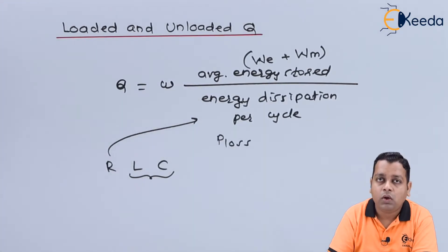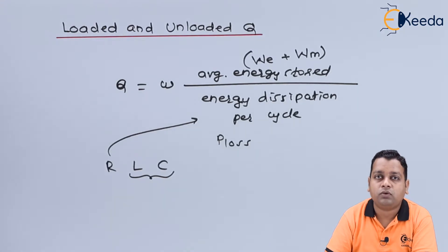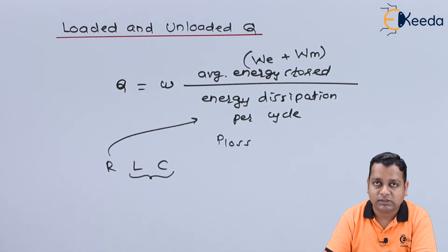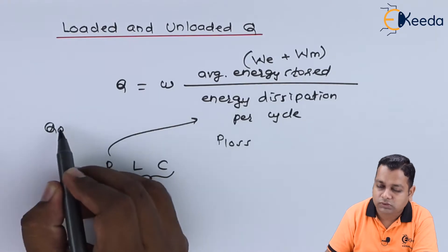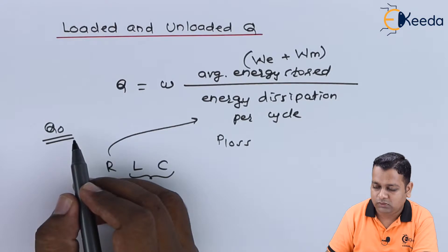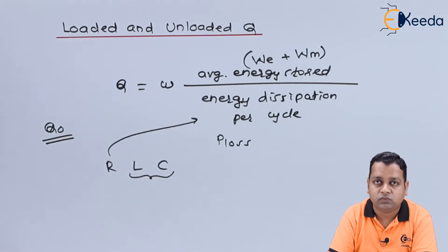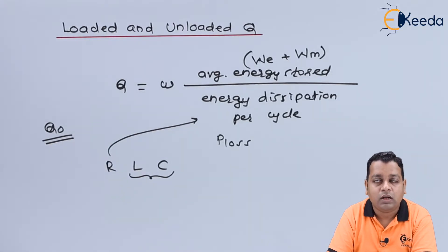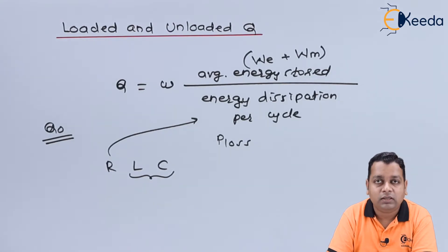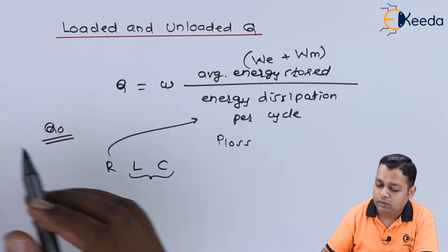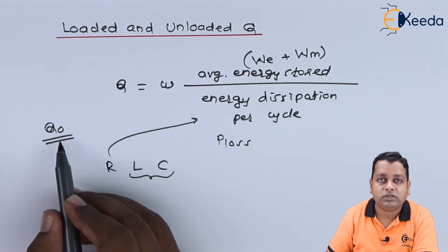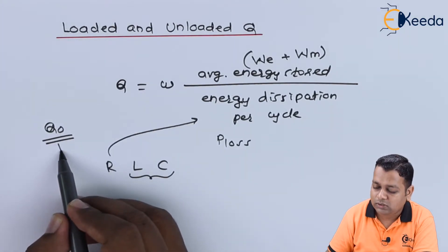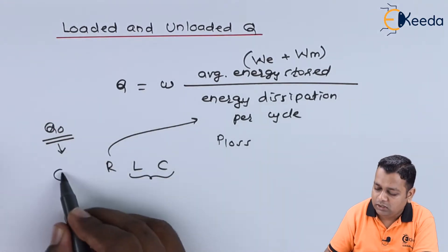When the resonator circuit is used without the effect of any external circuitry, we use Q in the form Q0 — the unloaded quality factor. However, in practice, microwave resonators require coupling for applications such as filtering, frequency measurement, or oscillation. Therefore, the unloaded Q0 must be modified to the loaded quality factor, denoted Q_L.